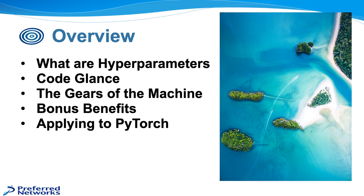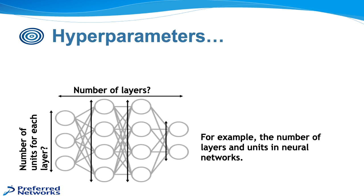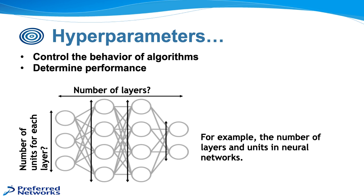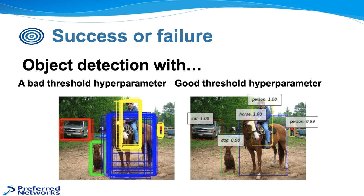So first off, what are hyperparameters? Hyperparameters are the variables that control the behavior of algorithms, and they're very important because often times they can strongly determine the performance of the algorithm. They're usually set manually by the programmer who will just put in a learning rate of a certain thing, or the number of layers, or which optimizer to use, which batch process to use, etc. The really important thing is that they determine the success or failure of your algorithms and programs.